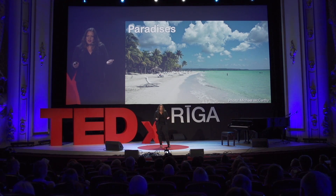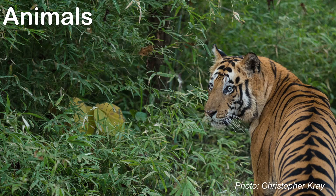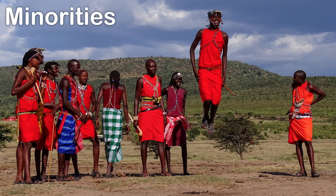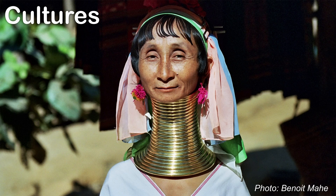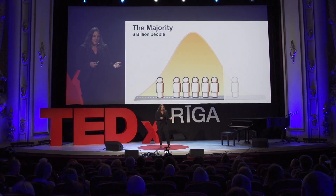We also see paradise beaches, rare beautiful animals, minorities, and weird cultures that are quite hard to understand. And the world becomes very, very strange. So we rely on stereotypes to understand how the other six billion people live.